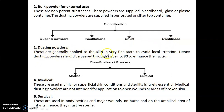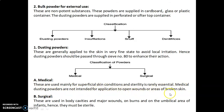Dusting powders are generally applied to the skin in very fine state to avoid local irritation. Hence, dusting powders should be passed through sieve number 80 to enhance their action. Classification of dusting powder is medical and surgical. Medical dusting powders are used mainly for superficial skin conditions and sterility is rarely essential; they are not intended for application to open wounds or areas of broken skin. Surgical powders are used in body cavities, major wounds, burns, and the umbilical area of infants, and hence must be sterile.